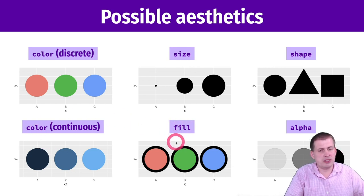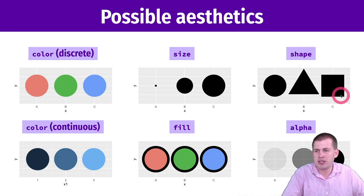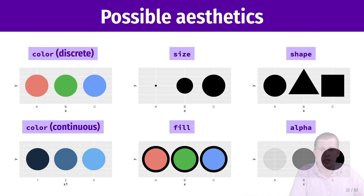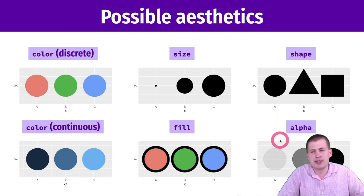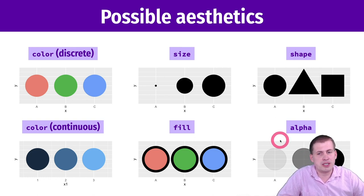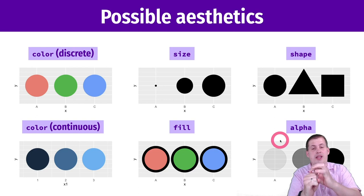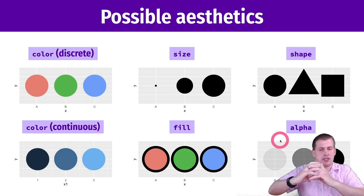You can fill points, boxes, or other chart elements with specific colors. You can also change the transparency of points using the alpha aesthetic. For example, countries with higher population would be darker and those with less population would be more transparent. That's one way of fixing overplotting — if you have lots of overlapping points, making them very transparent causes them to build on each other, so you get darker areas in a scatter plot.